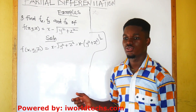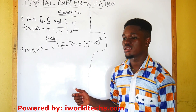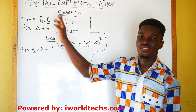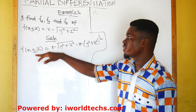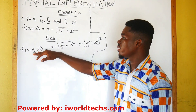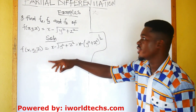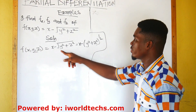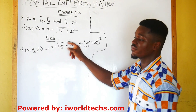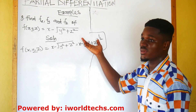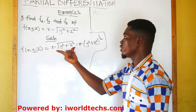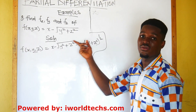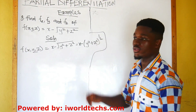Hello guys, welcome to this lesson. Here is example 3 of this topic. We are given another multivariate fraction f, given by x minus the square root of y squared plus z squared. This can also be written with the square root as exponent half.